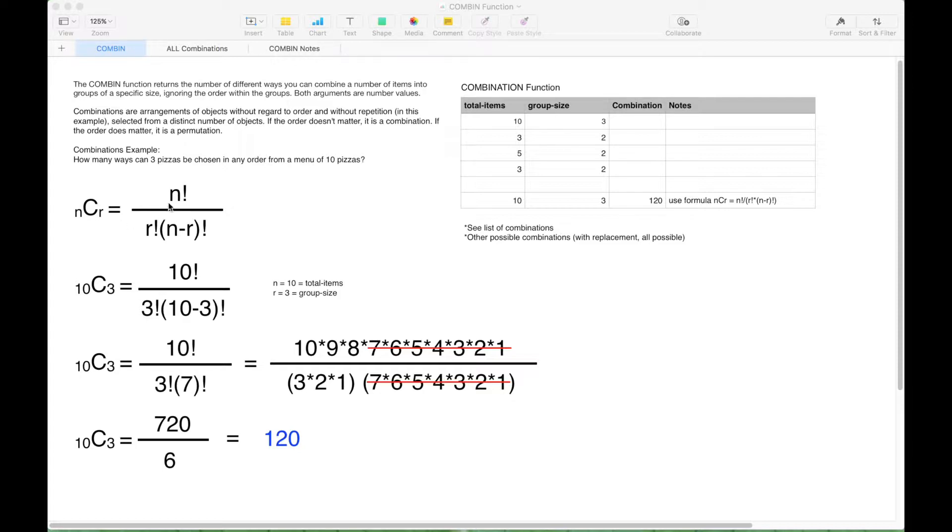The combination equals n factorial over r factorial times n minus r factorial. Now, when we go ahead and plug in our numbers from our example using the pizzas, we get 10 factorial over 3 factorial times 10 minus 3 factorial, where n equals 10, and that is the total items, and r equals 3, which is the group size.